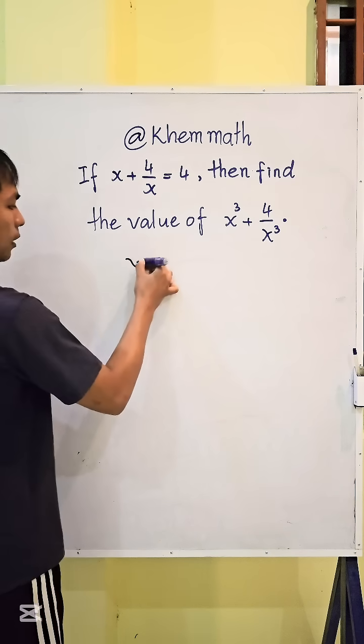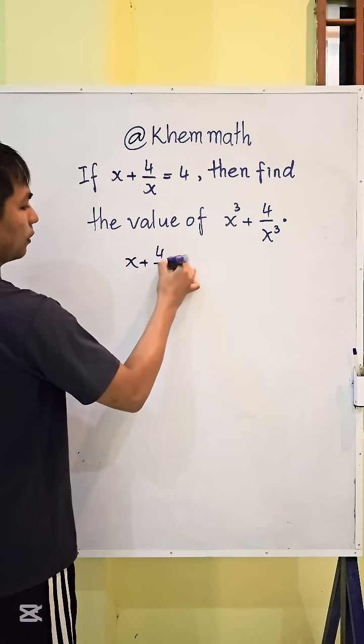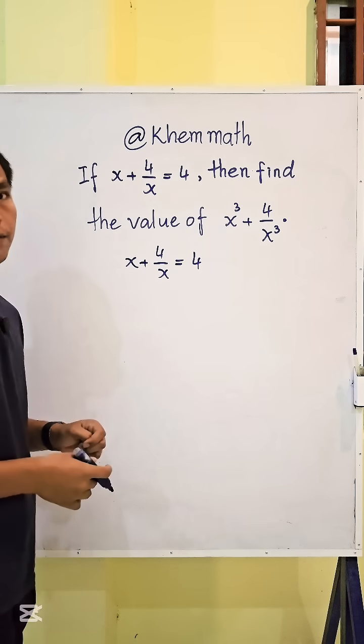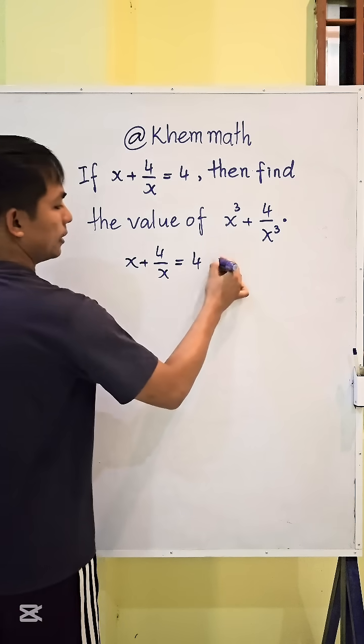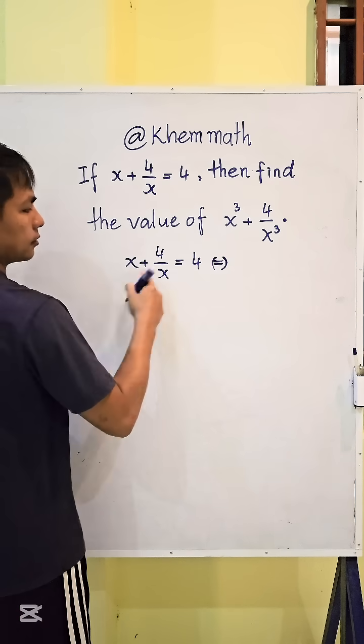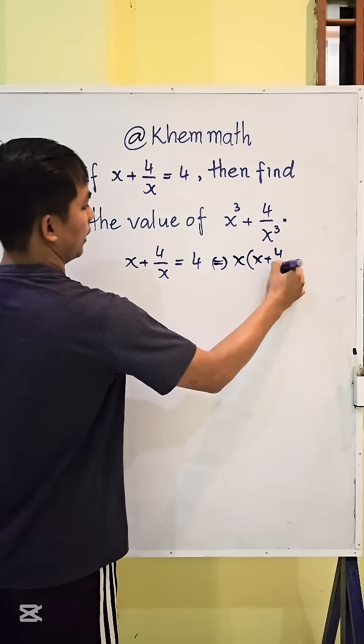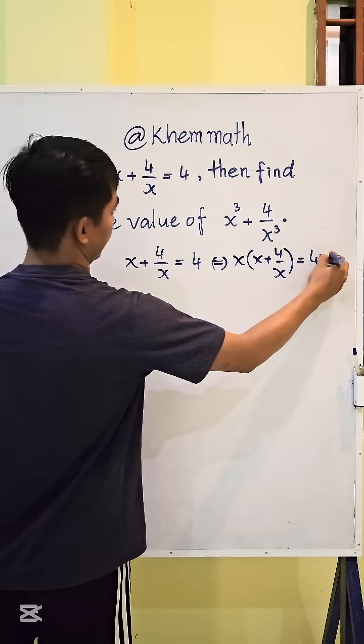We have x plus 4 divided by x equals 4. So we multiply both sides of this equation with x. So we get x times x plus 4 divided by x equals 4 times x.